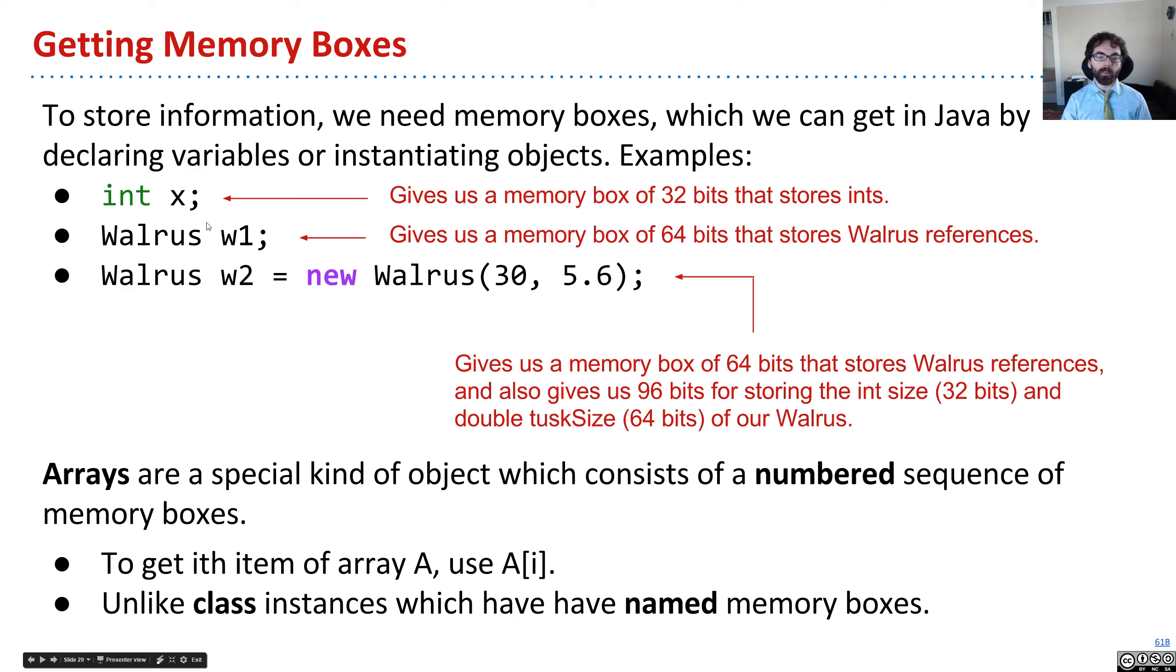If we say walrus w1, that gives us a memory box of 64 bits that can store the location of a walrus. And if we say walrus w2 equals new walrus 30, 5.6, a bunch of different stuff happens, but ultimately we get 32 bits to store the size of the walrus, 64 bits for the tusk size, and 64 bits to store the reference to this walrus.